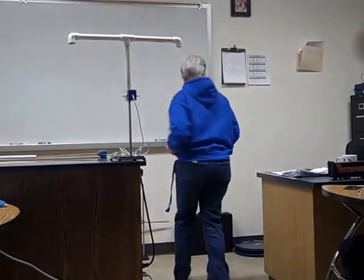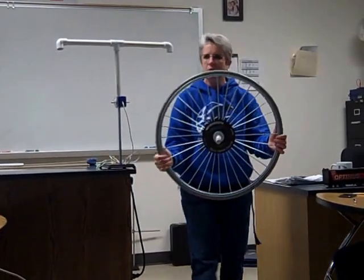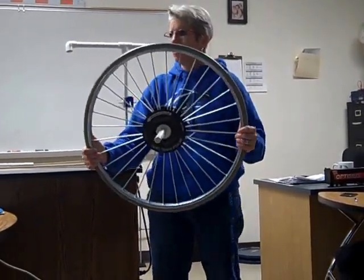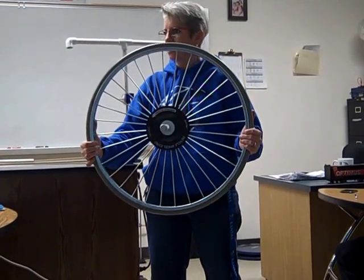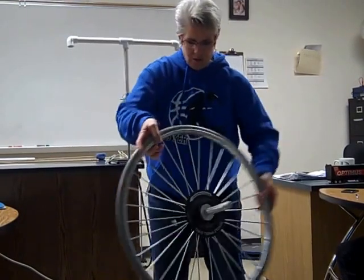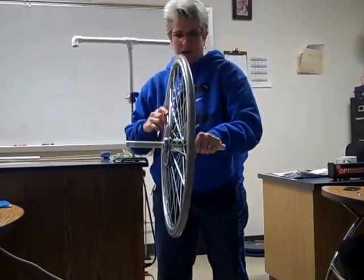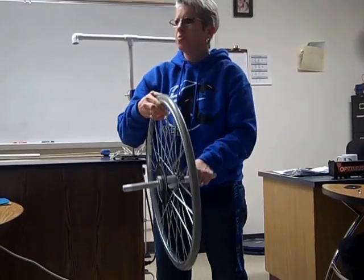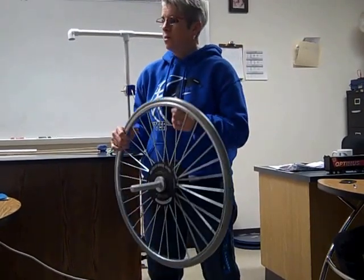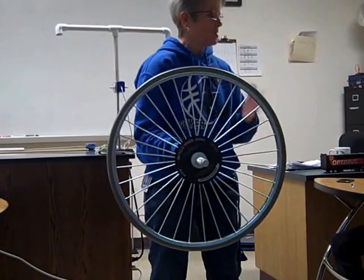The next demonstration from last class that we talked about was our bicycle wheel. This single object can rotate about many different axes — it could rotate this direction, that direction, or about this axis. It can spin on many different axes, and certain axes are going to distribute this mass differently, so it's going to be easier to spin in some orientations than others.